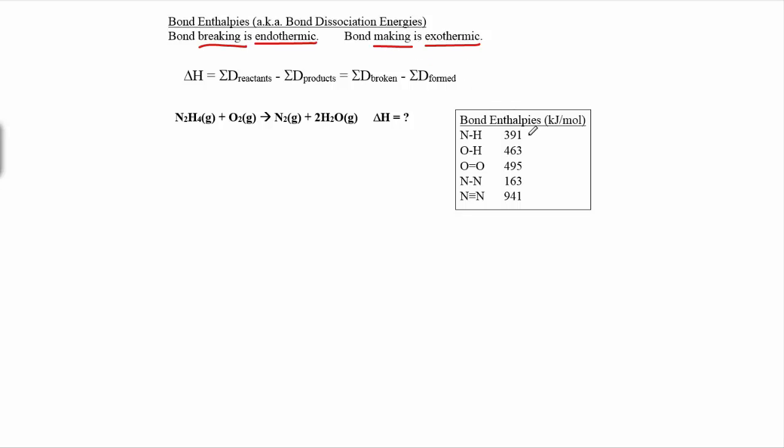When you see a bond enthalpy, like this NH bond value right here, that means it takes 391 kilojoules per mole to break an NH bond, whereas if you make an NH bond it would actually release that much.